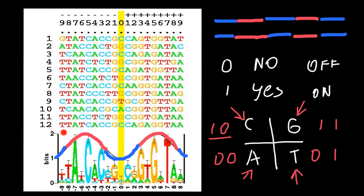That's why the maximum here is two bits, and we have two bits when some base is completely conserved. The height of each stack in the logo is calculated by taking the log of the frequencies. For example, 8 out of 12 cytosines would represent a frequency of 0.66, and we take the log of this number. We take the logs of all the frequencies, and this is how the heights of the stacks are calculated. This is how we get rid of the noise.